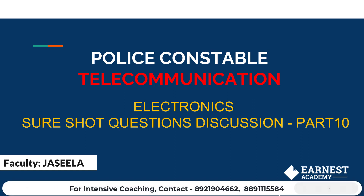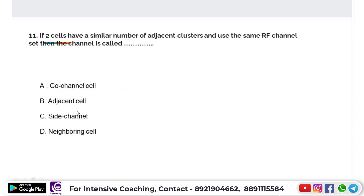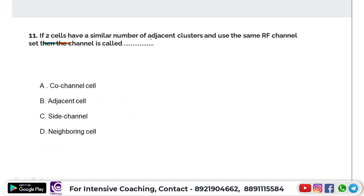In this police constable telecommunication and police codes question discussion session: if two cells having similar number of adjacent clusters use the same RF channel set, then the channel is called a co-channel cell, adjacent cell, side-channel cell, or neighboring cell?